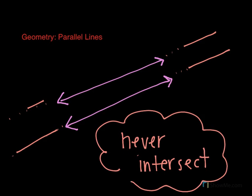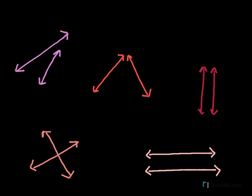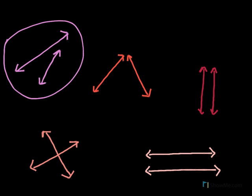So let's practice identifying some parallel lines. I have different sets of pairs of lines here — they're not all parallel and we're going to figure out which ones are and aren't parallel. Let's start with these purple ones right here. These lines aren't intersecting and they're not touching yet. However, if you continued this line on and this line on, they would eventually intersect.